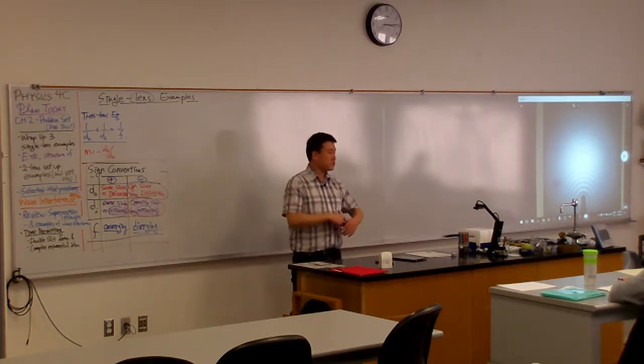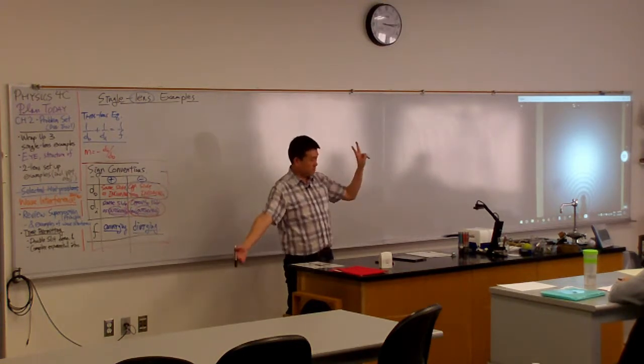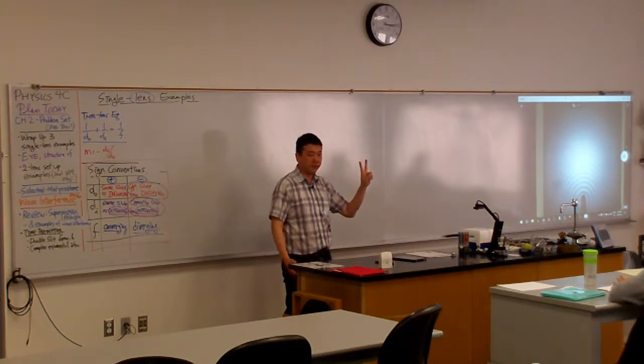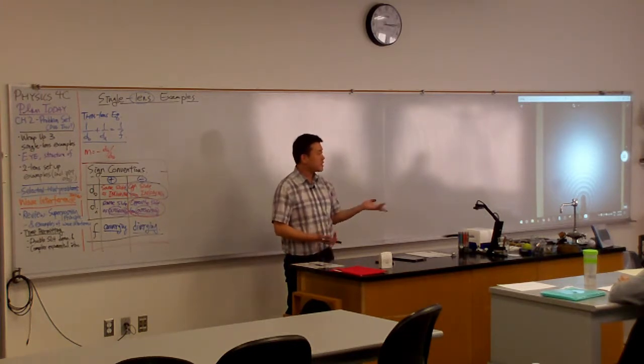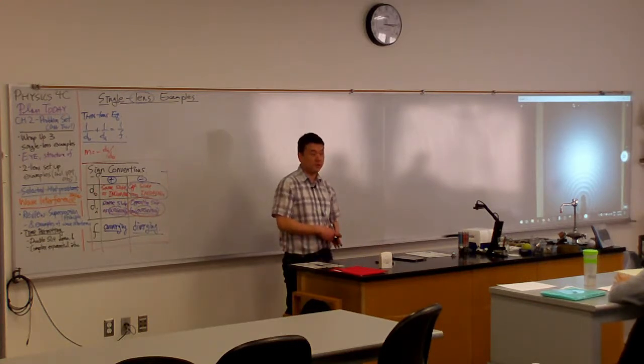So one reason is with a bigger mirror, you catch more of the light. The second thing that we'll get to in about two weeks is called the Rayleigh criterion. It establishes something called a diffraction-limited resolution limit of a telescope.